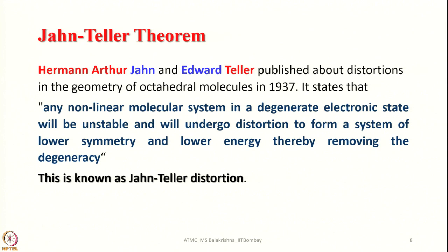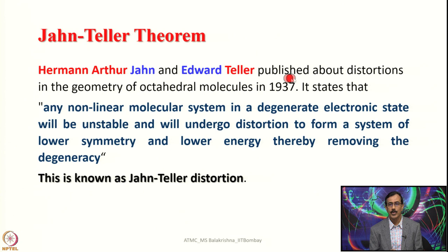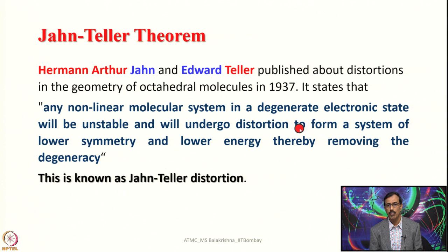Now let us move on to the Jahn-Teller theorem. The full names are Hermann Arthur Jahn and Edward Teller — most books introduce them simply as Jahn-Teller — who published about distortions in the geometry of octahedral molecules in 1937. The theorem states: any non-linear molecular system in a degenerate electronic state will be unstable and will undergo distortion to form a system of lower symmetry and lower energy, thereby removing the degeneracy.